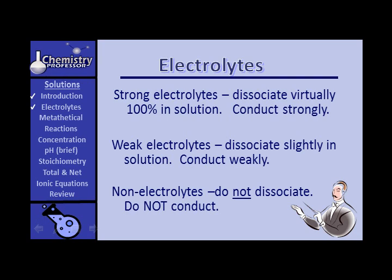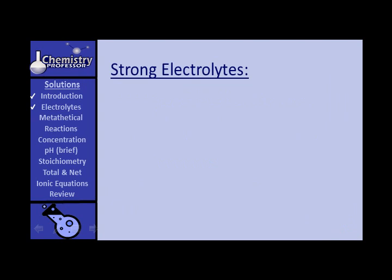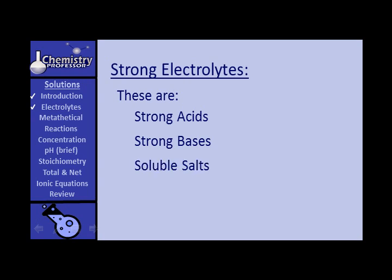Non-electrolytes are substances that do not tend to dissociate in solution. They may be soluble in water, but they don't tend to form ions in water, and therefore will not conduct an electrical current to a significant extent when in solution. What are strong electrolytes? They are strong acids, strong bases, and soluble salts. Let's take each one separately.